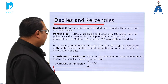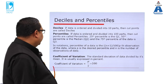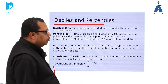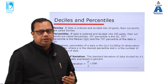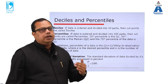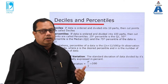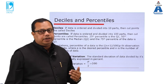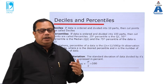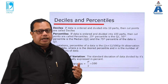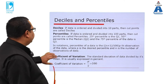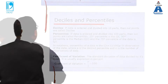The coefficient of variation is when the standard deviation is divided by the mean, expressed as a percentage. Given a dataset, we calculate the mean, then the variance, and the square root of the variance gives the standard deviation. When the standard deviation is divided by the mean, that is called the coefficient of variation.